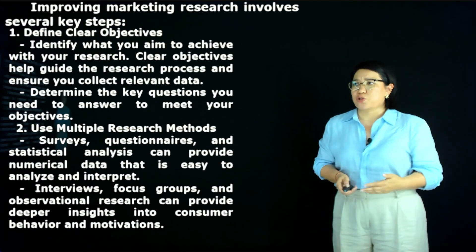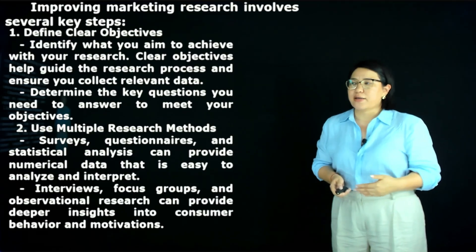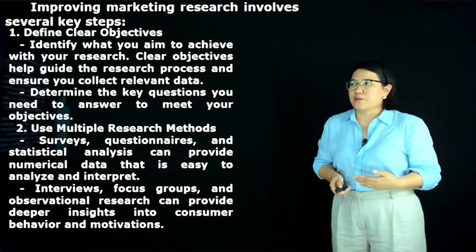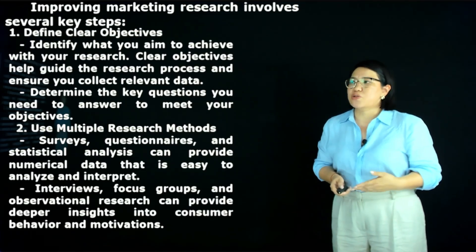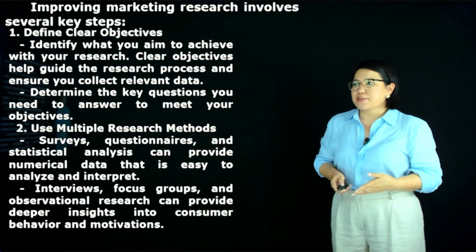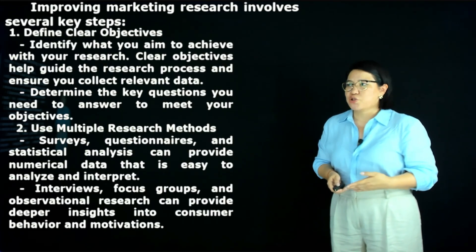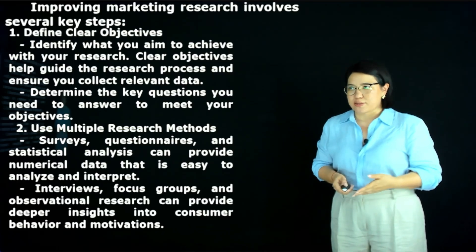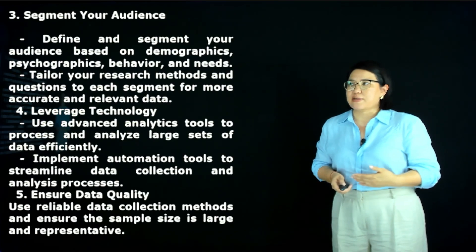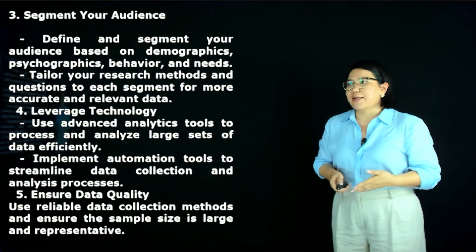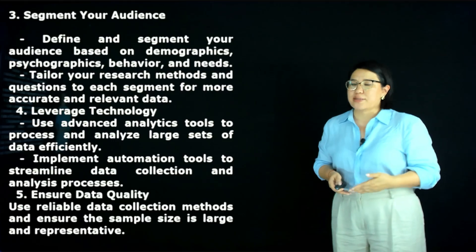Improving marketing research involves several key steps. First, define clear objectives: identify what you aim to achieve with your research and determine the key questions you need to answer to meet your objectives. Second, use multiple research methods: surveys, questionnaires and statistical analysis can provide numerical data that is easy to analyze and interpret, while interviews, focus groups and observational research can provide deeper insight into consumer behavior and motivations. Third, segment your audience: define and segment your audience based on demographics, behavior and needs, and tailor your research methods and questions to each segment for more accurate and relevant data.